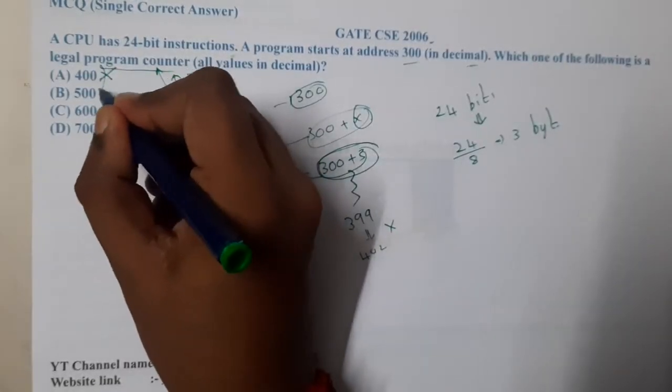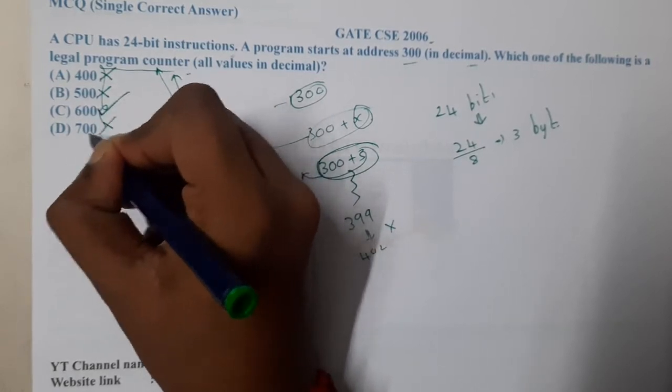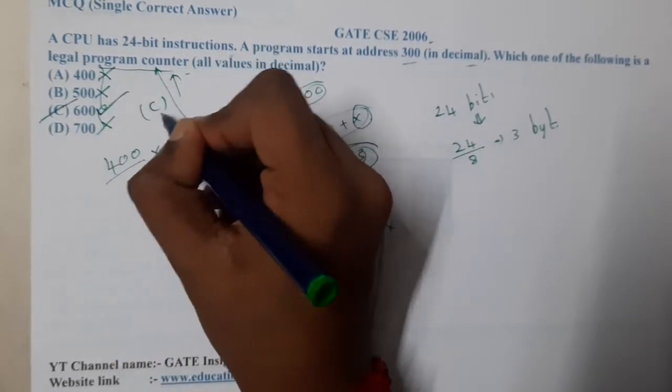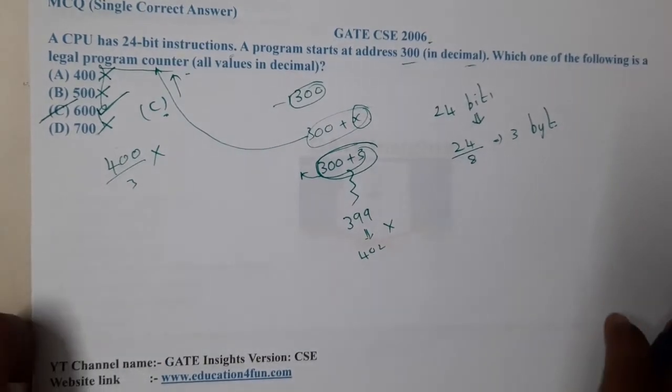With that logic you can say 400 is wrong, 500 is wrong, 600 is correct, and 700 is wrong. With that understanding you can say that C is the correct answer. It is a quite easy question. The only thing is it is just directly based on the concept.